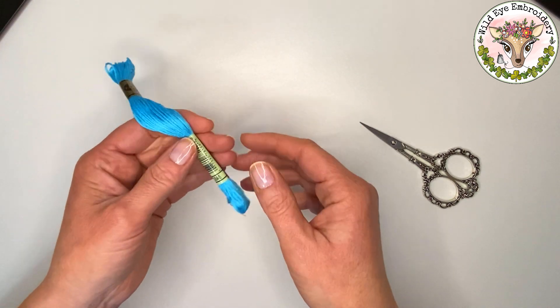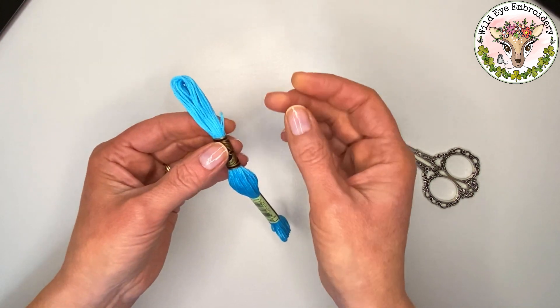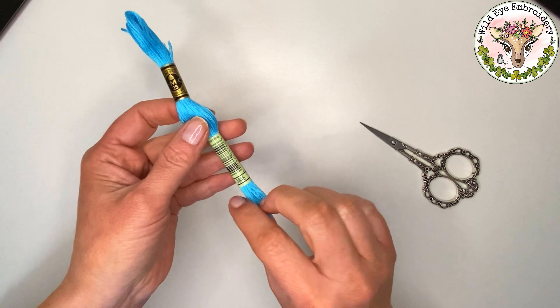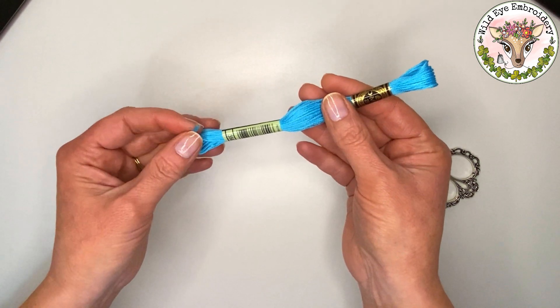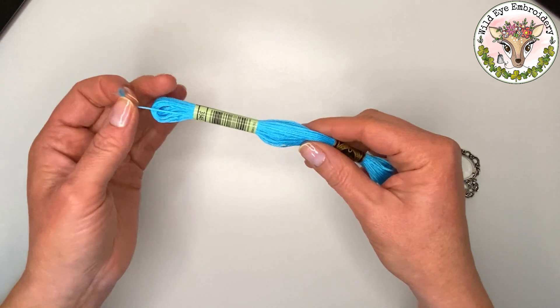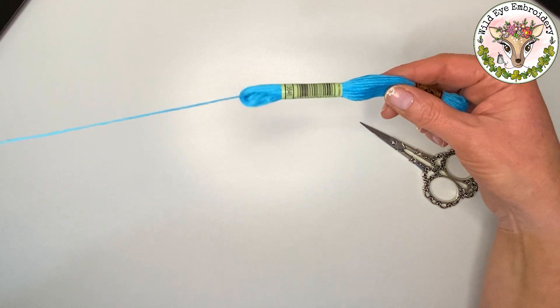Now the whole part of the floss is called a skein. Now I'm going to show you how to unravel this first of all. As you can see at the top of the skein there is an end sticking out. At the bottom there is another end sticking out. You always work from the bottom and you can actually gently pull on this without taking your labels off.